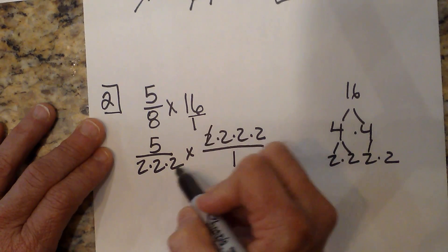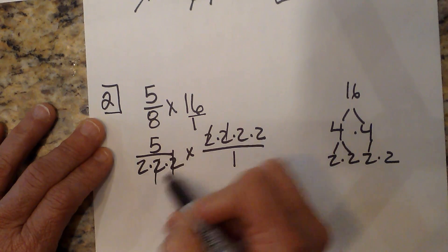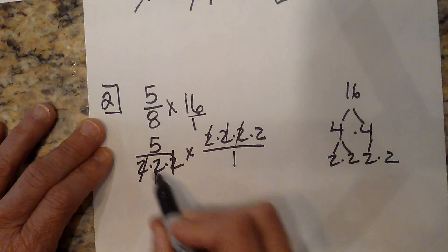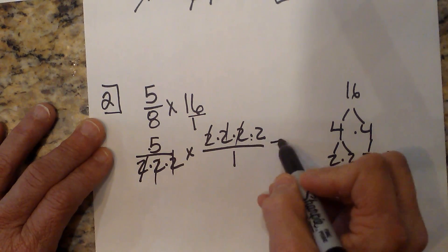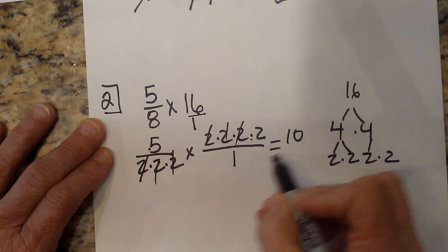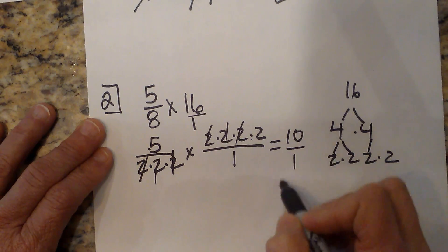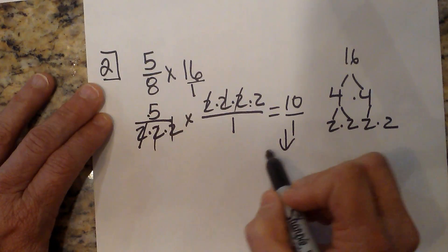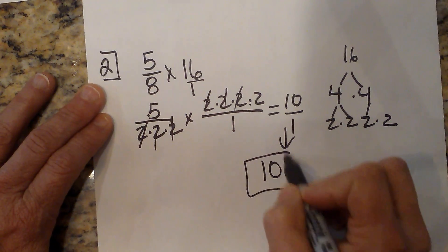Now let's cancel. The 2 is gone. This 2 is gone. This 2 is gone. So what's left? 5 times 2 is 10. There's nothing left on the bottom except for a 1, so my final answer I'm just going to write as the whole number 10.